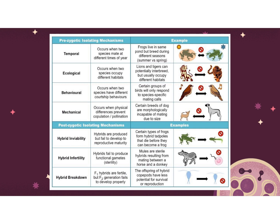Specific examples: temporal is time — one animal is nocturnal, one is diurnal, or one comes out in spring and one in fall, so they physically don't come in contact. Ecological is different habitats — they simply live in different places. Behavioral isolation refers to techniques of attracting mates, like bird songs, that don't work across species. Mechanical means they physically cannot copulate — the pieces don't go together. Postzygotic barriers result in hybrids that can't reproduce — you can make a mule, a liger, a tigon — they're born but can't make more of themselves, so we don't consider them a species.